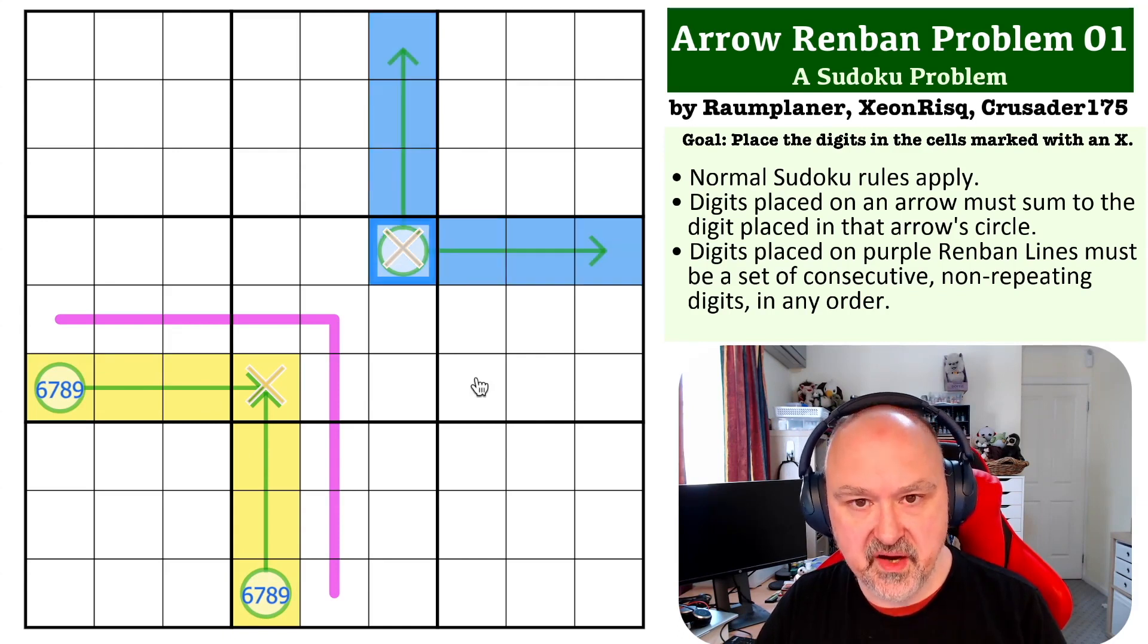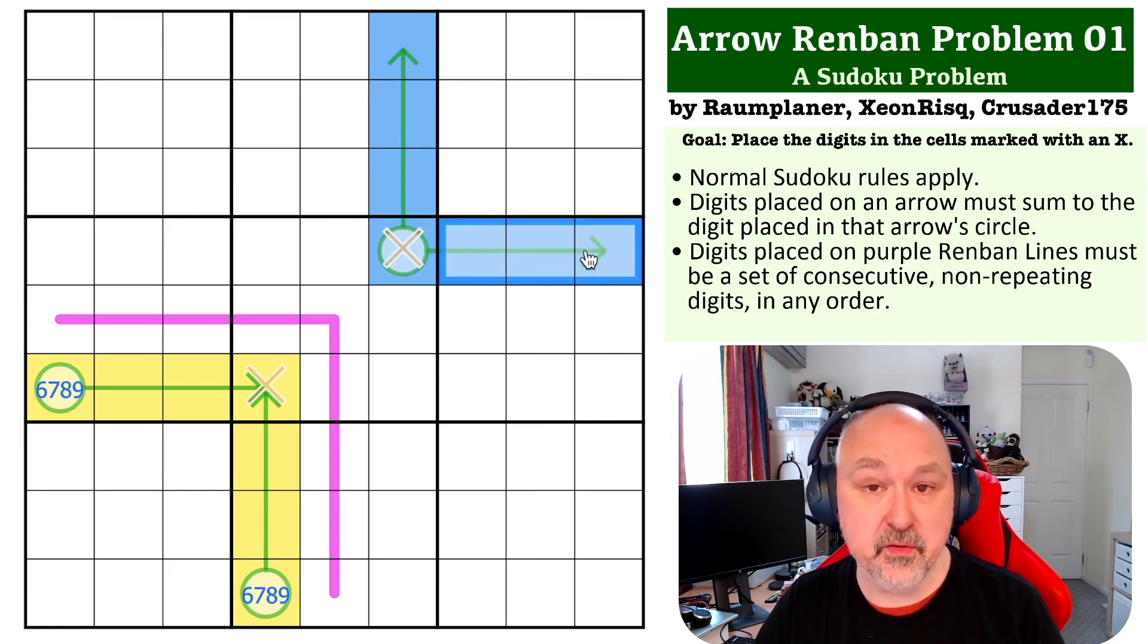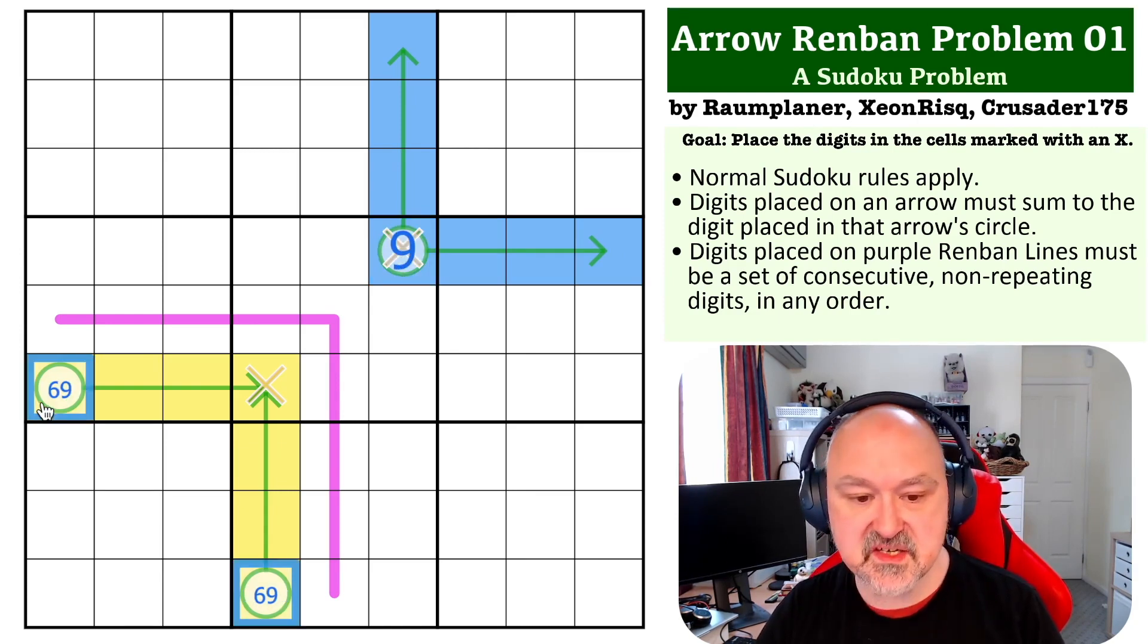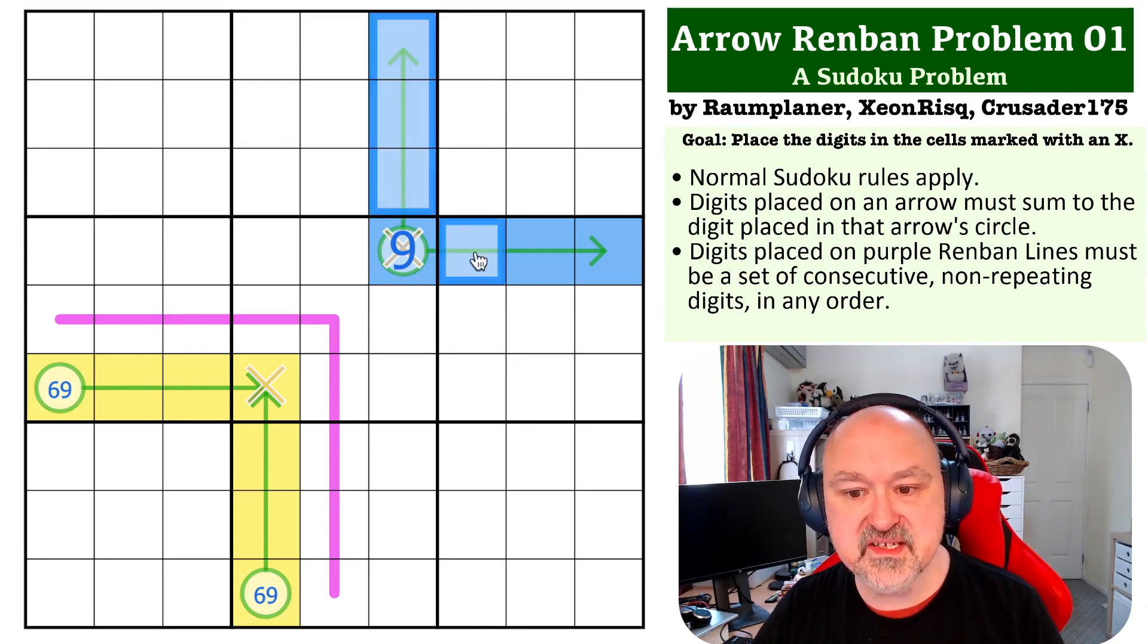Well, if this is a nine, you still can't put a seven or an eight onto a three-cell arrow, because on a three-cell arrow, the largest digit you can put, if it sums to a single digit, where they all see each other, is a six, with one, two, six, summing to nine. So, this must be a nine. This must be a six, nine pair, because I cannot put a seven or an eight into blue at all.